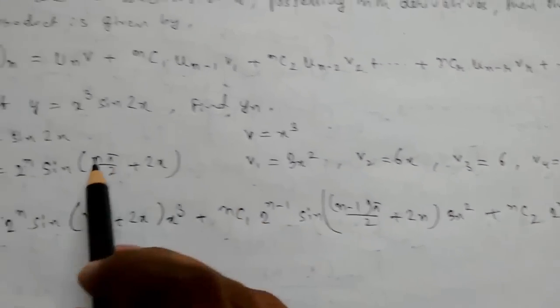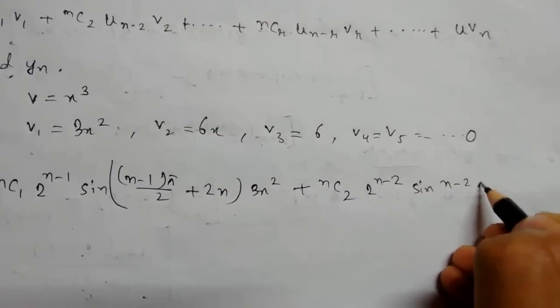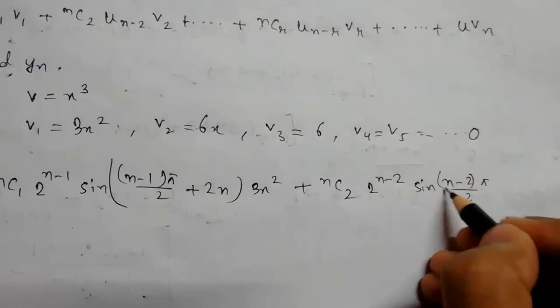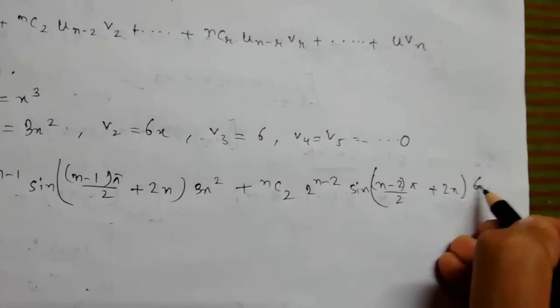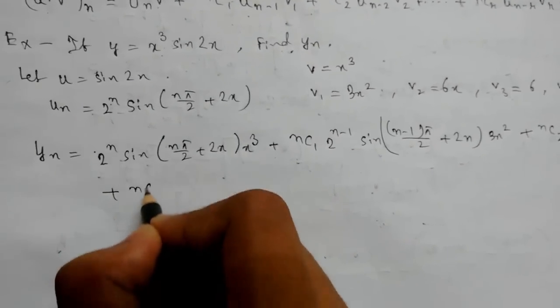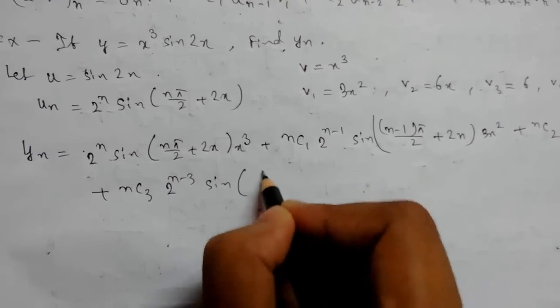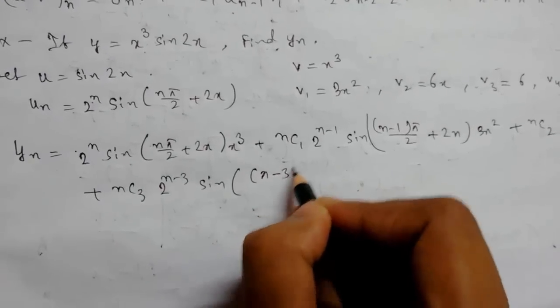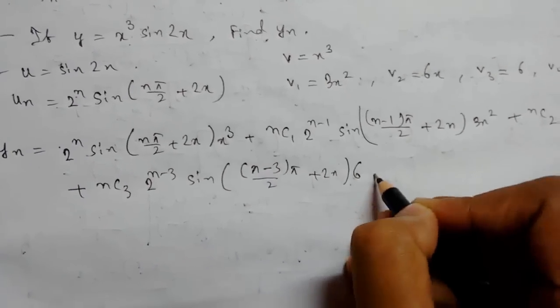times 6x. Now plus nC3·2^(n-3)·sin((n-3)π/2 + 2x)·6. After this all the terms will be 0, 0, 0, and the last term will be sin(2x)·0, which will be 0.